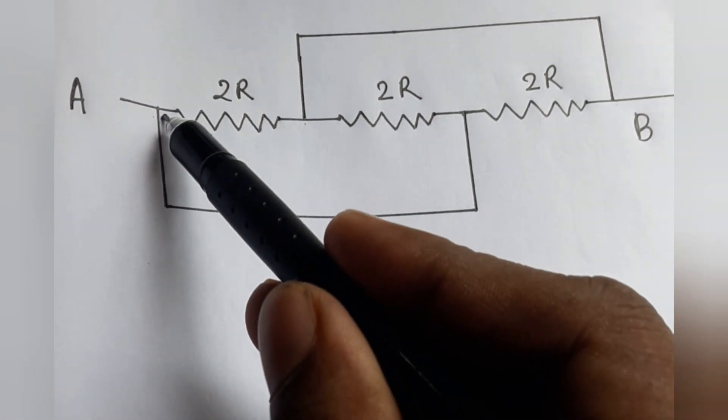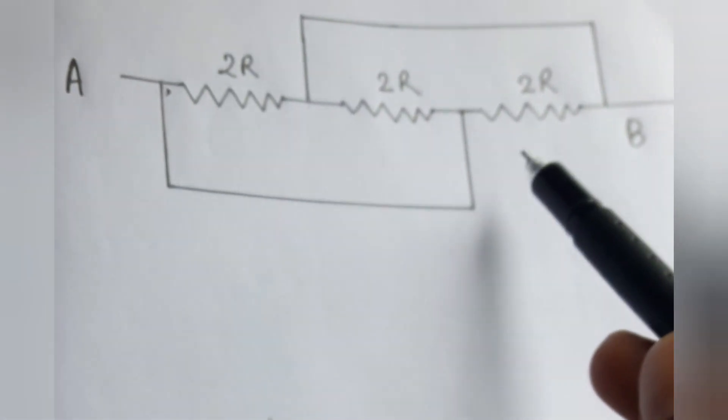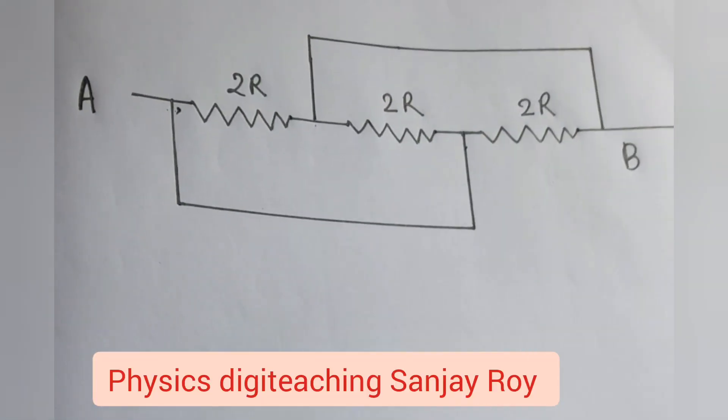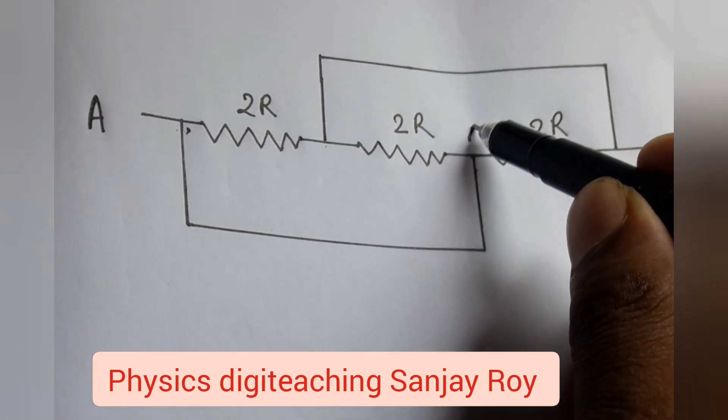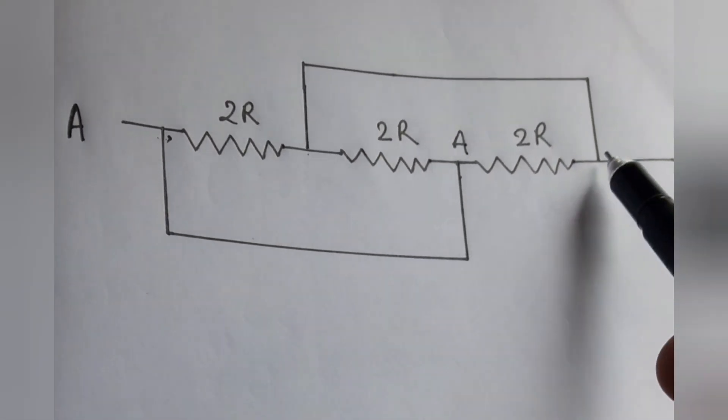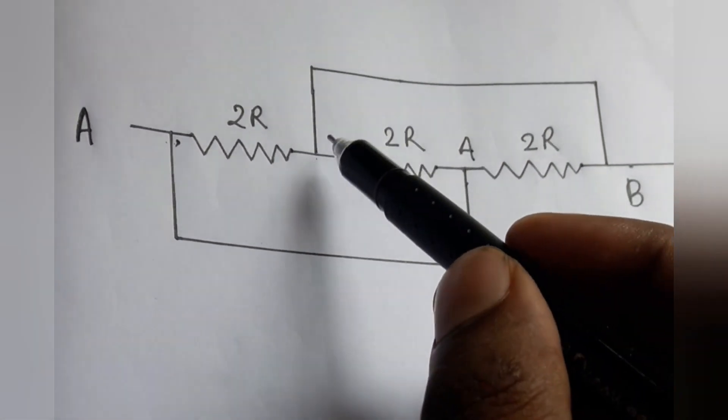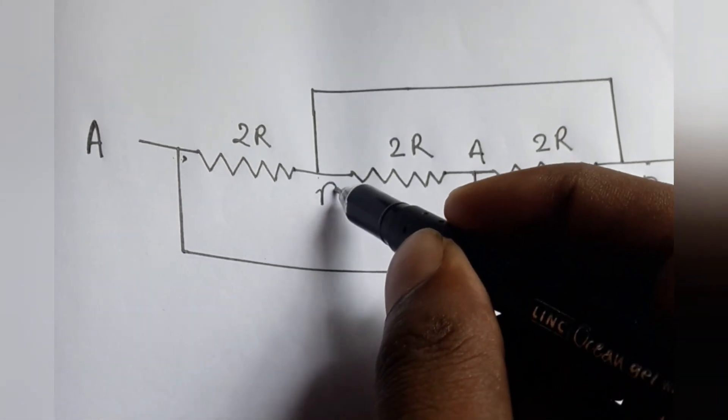Then this point is A and also this point is A. Again, this point is B and this point is also B.